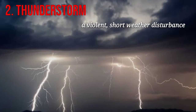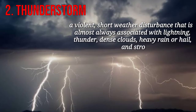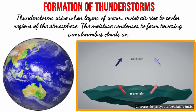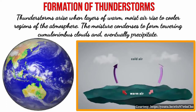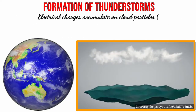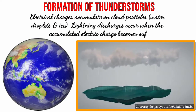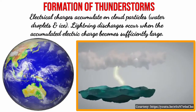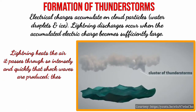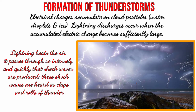Next is the thunderstorm — a violent, short weather disturbance that is almost always associated with lightning, thunder, dense clouds, heavy rain or hail, and strong gusty winds. Thunderstorms arise when layers of warm, moist air rise to cooler regions of the atmosphere. The moisture condenses to form towering cumulonimbus clouds and eventually precipitates. Electrical charges accumulate on cloud particles, and lightning discharges occur when the accumulated electric charge becomes sufficiently large. Lightning hits the air it passes through so intensely and quickly that shock waves are produced, which are heard as claps and rolls of thunder.